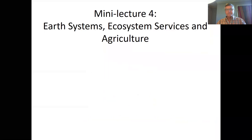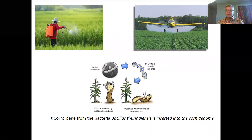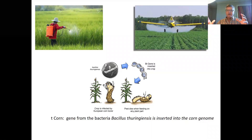I'm going to share my screen again. This is where we ended off — thinking about the earth system scale, this idea of novel compounds or novel substances, which here we're thinking about things like pesticides. And how does the way we do agriculture affect that?